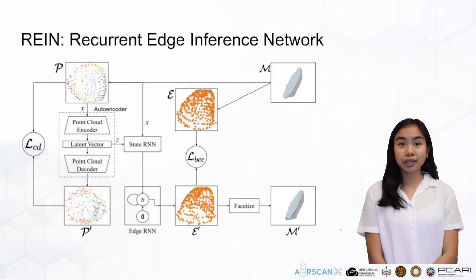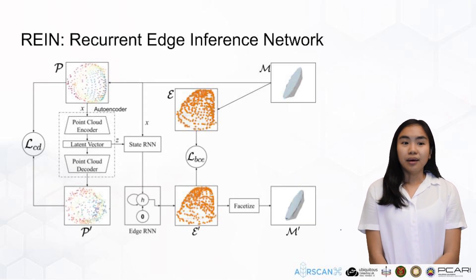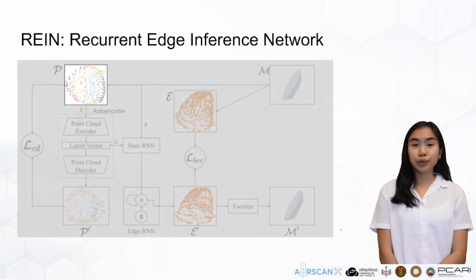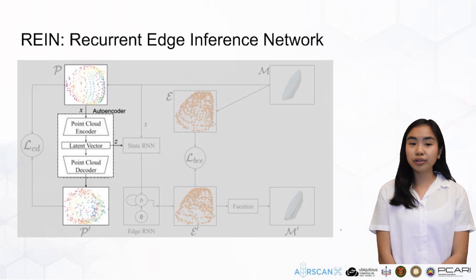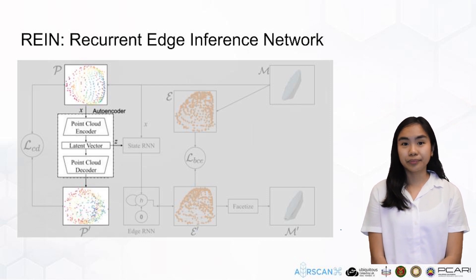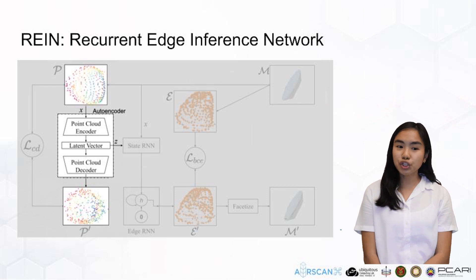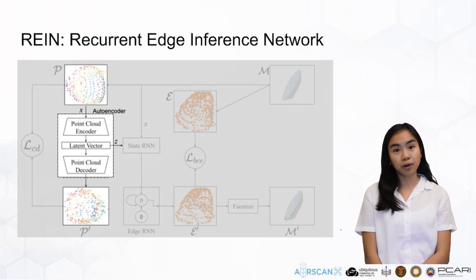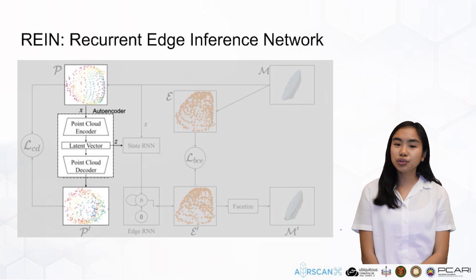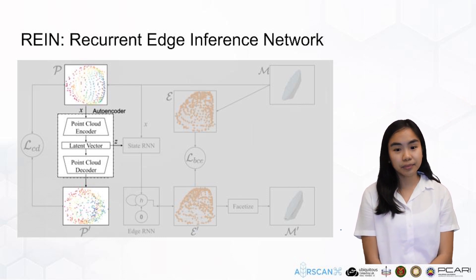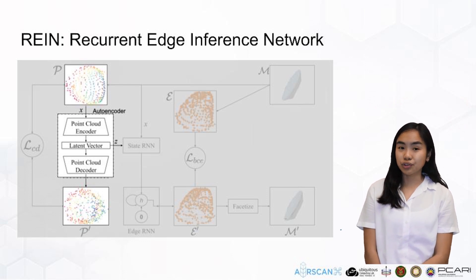This is the network architecture of RAIN. The mesh generation starts with the input point cloud. This point cloud is the input to an autoencoder where a latent vector representation is obtained. A PointNet-based autoencoder is used. Most of the information about the input points should be accessible from this latent vector Z, from which we should be able to infer the general structure of the target object. To ensure the input and output point clouds of the autoencoder are consistent, chamfer distance is applied as the loss function.